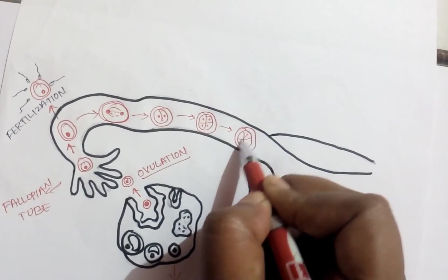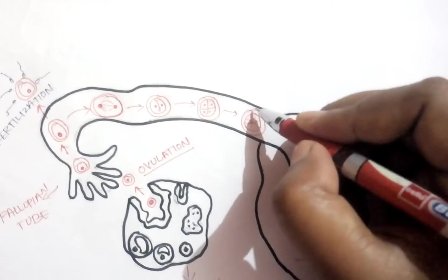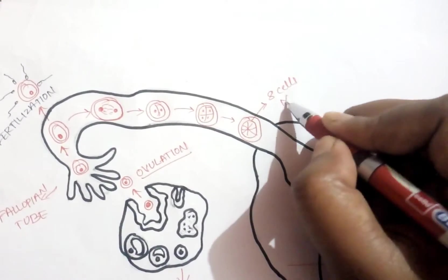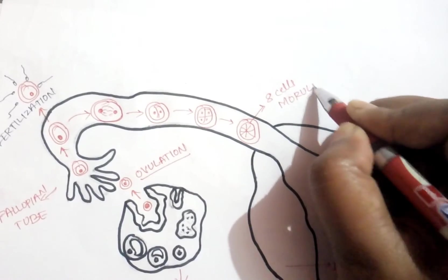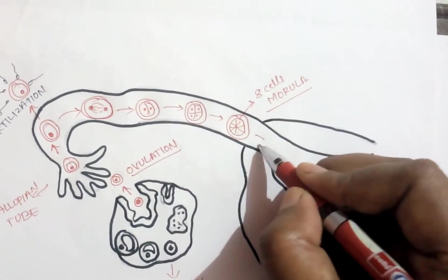By the third day, it will get the eight cell structure. This eight celled structure is called as morula. It occurs by the third day of fertilization.